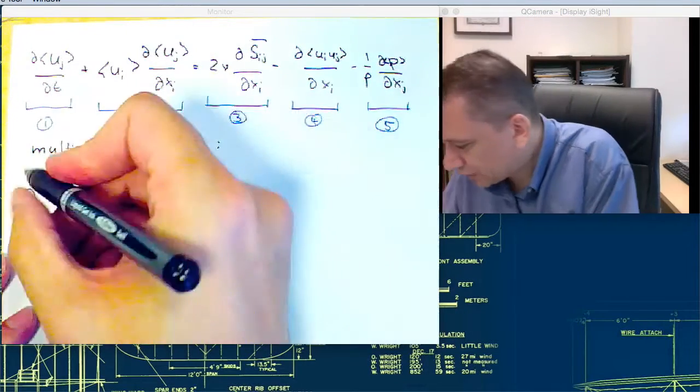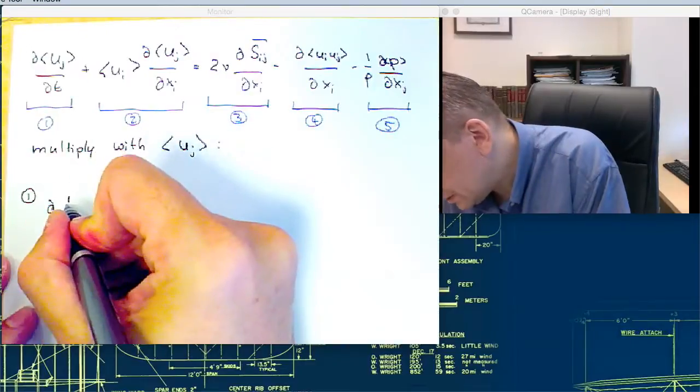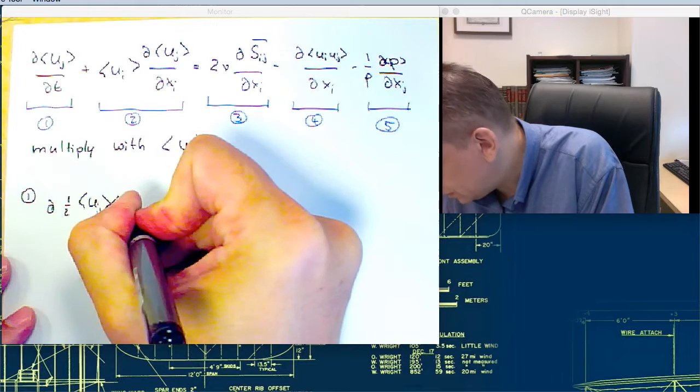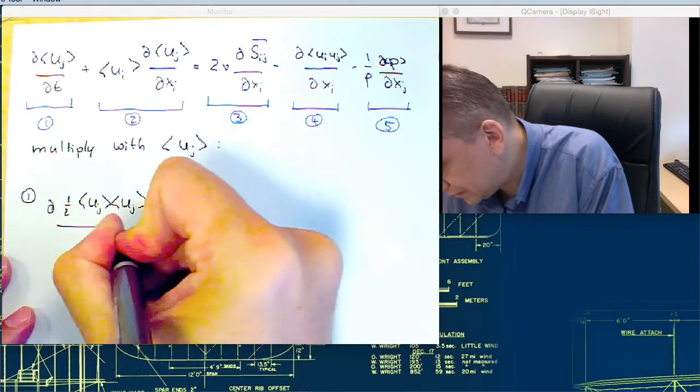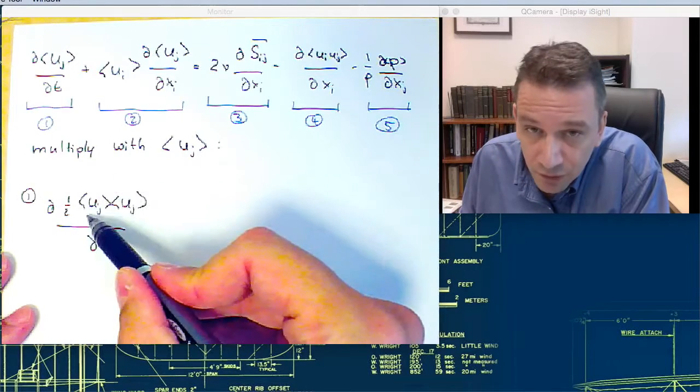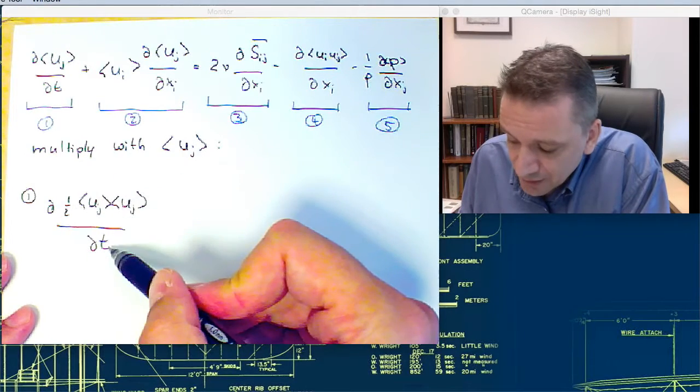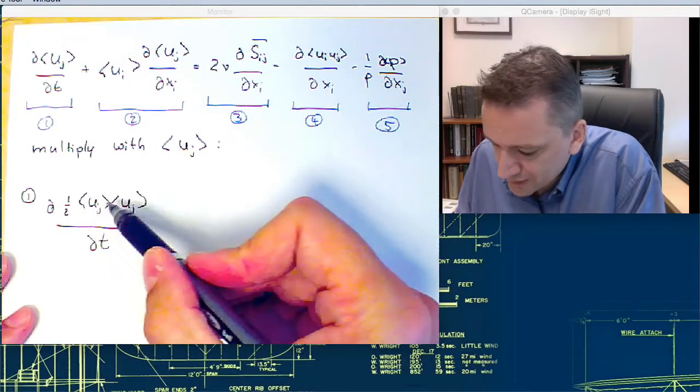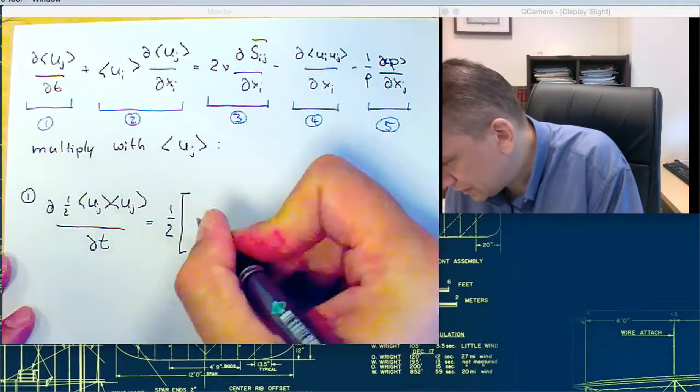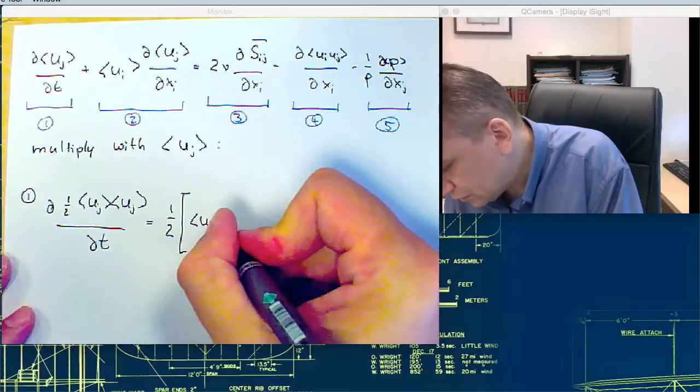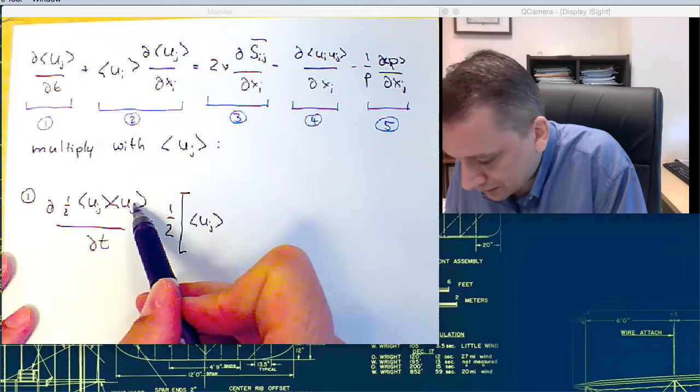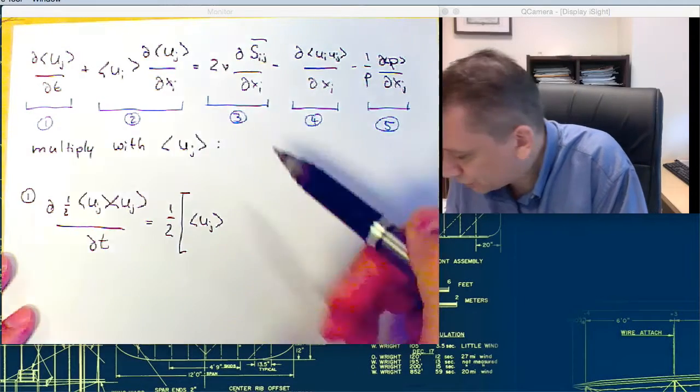But to get there, actually what I would like to have is something like d one half uj dt, because this one is the energy of the mean flow. So let's see how this one works out. If we multiply that out, this one becomes one half uj, so first this term times the derivative of this one, then this term times the derivative of this one. Product rule.